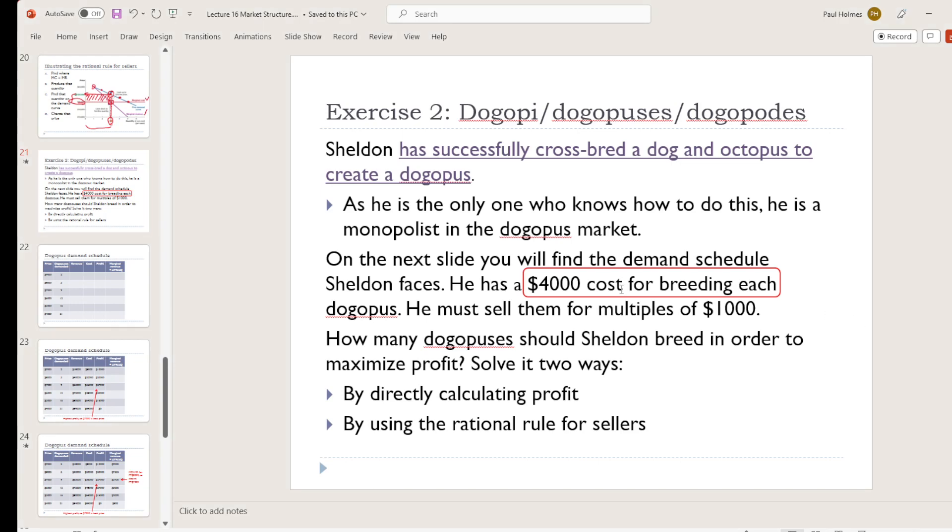These things are expensive to breed. It's going to cost Sheldon $4,000 for each Dogopus that he wants to produce and for whatever reason he has to sell them for multiples of $1,000.